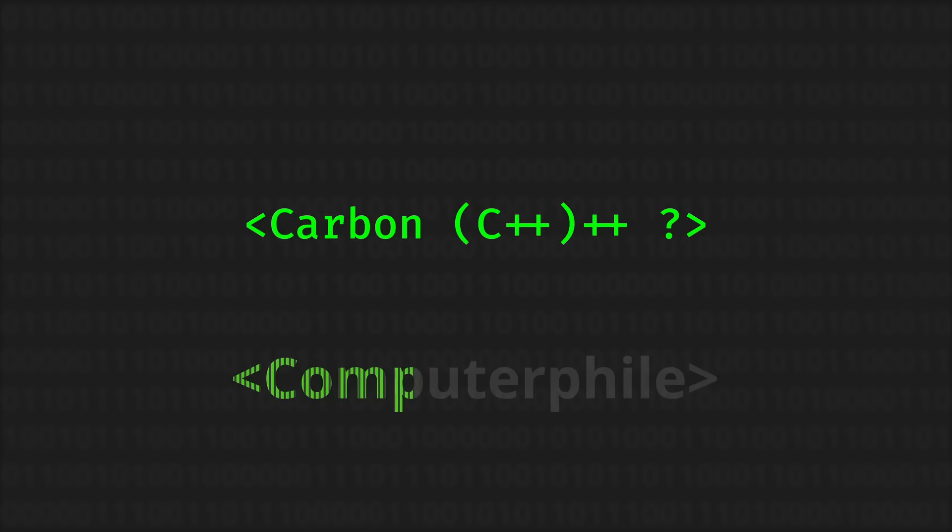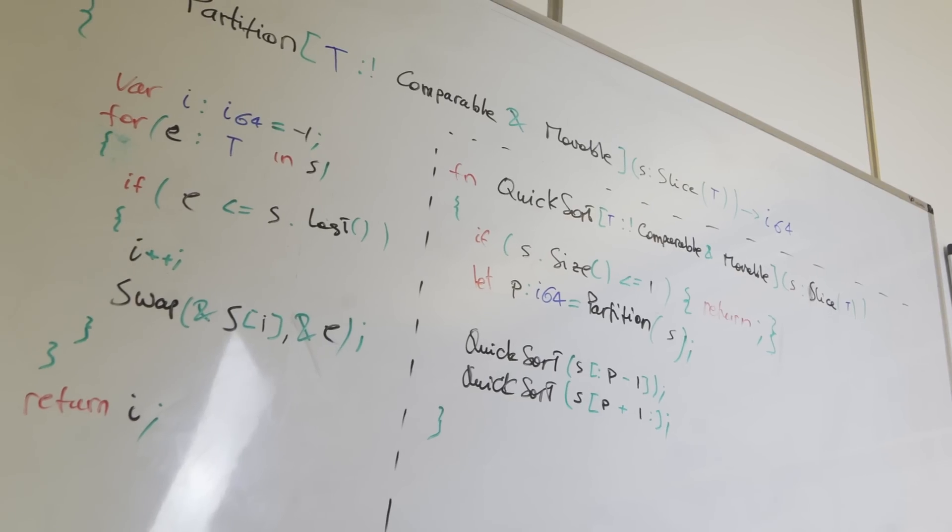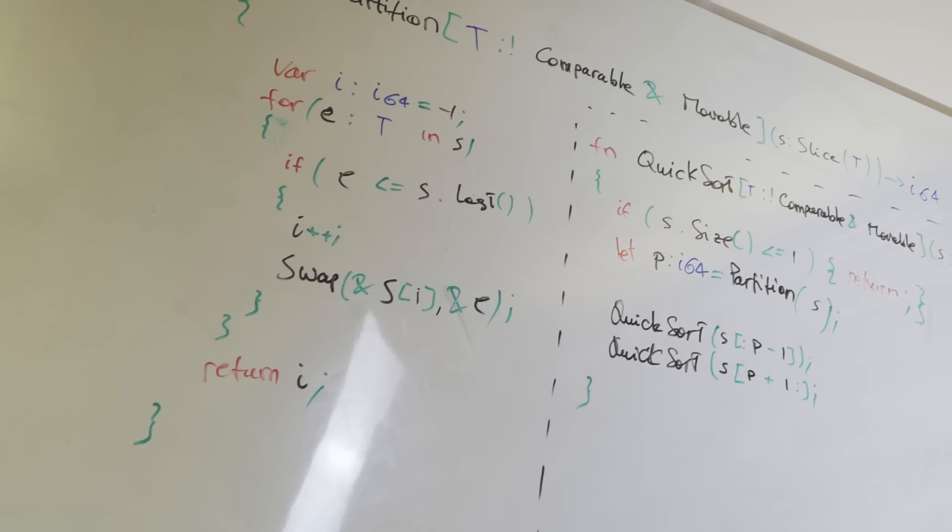Its goal is to replace C++. Initially introduced by Google and now an open source project driven by the community, Carbon has a goal very similar to what Rust had. While Rust aimed to take over C, the objective of Carbon would be to dethrone C++. However, this is not certain, especially since Carbon is still under development and far from being complete.